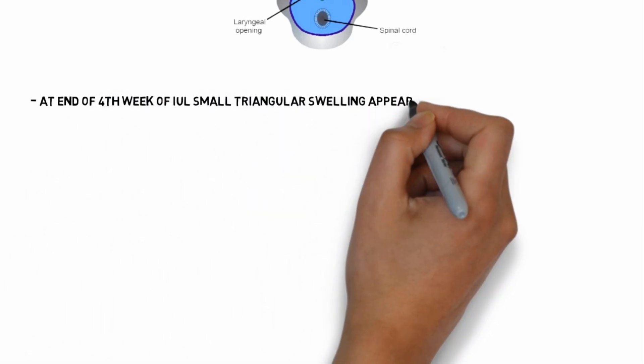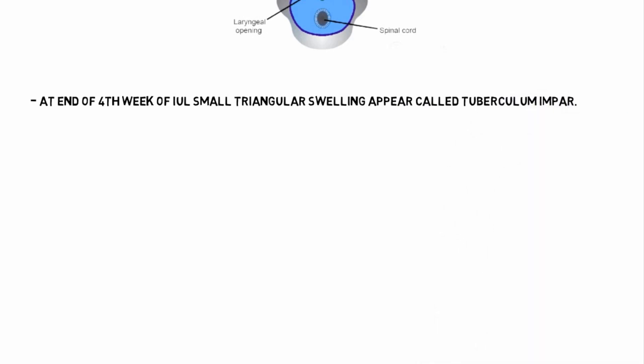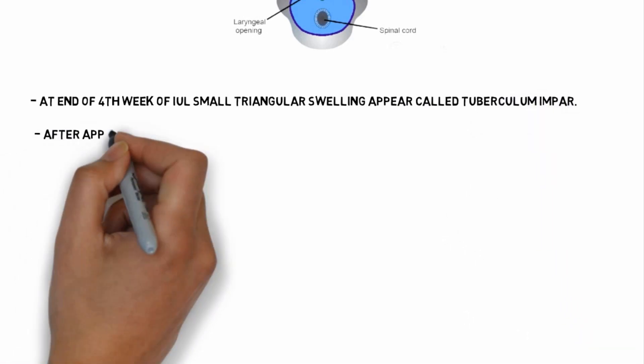At the end of fourth week of intrauterine life, a small triangular swelling appears called tuberculum impar.